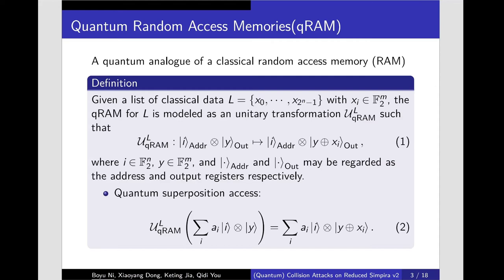Next, we introduce the definition of quantum random access memories. It is a quantum analog of a classical random access memory. Given a list of classical data L with x_i.